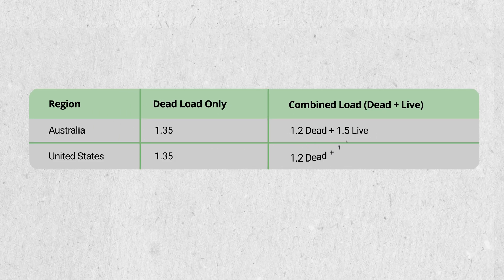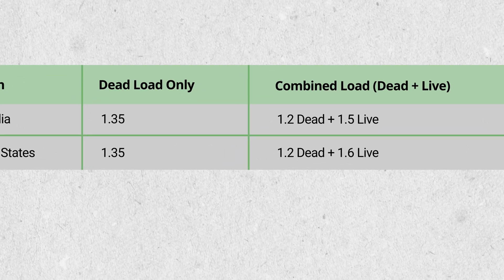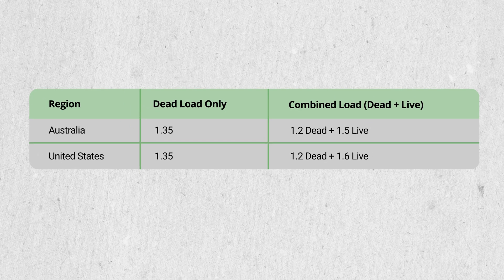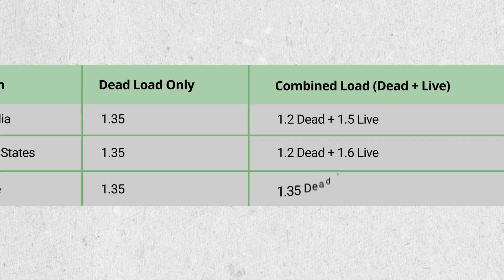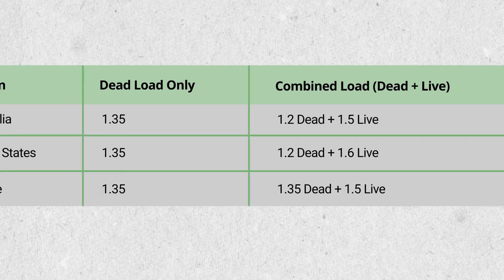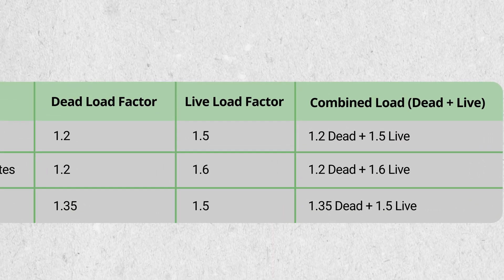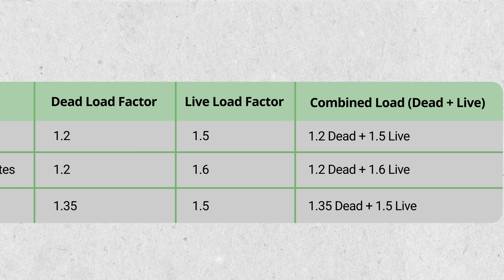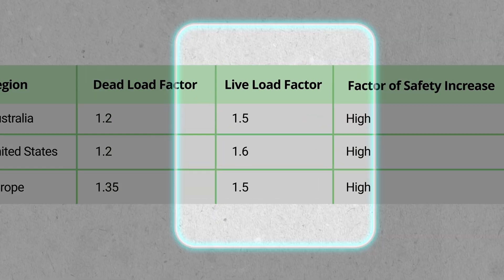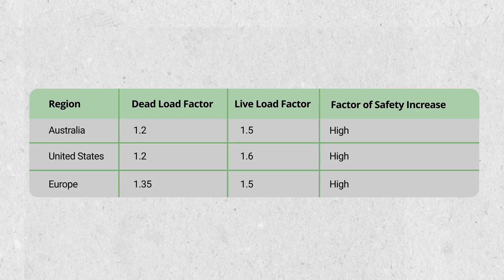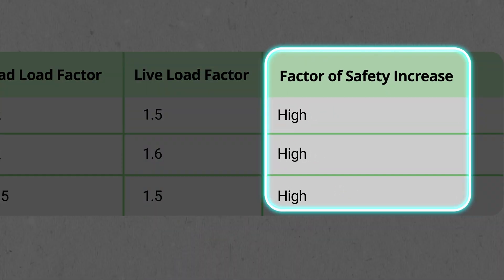In the US, you'll have a 1.2 dead load plus a 1.6 live load, so they're more concerned about the live load factors applied to your elements. In Europe, it's a 1.35 dead load plus a 1.5 live load. As you can see, the combinations are very similar — they're amplifying live load more and increasing dead load by a different amount. That's because dead load is a well-understood load; we're more confident in it, so we have a lower factor of safety. Live load, which is higher across all the standards, is a little bit unknown, and because of that unknown behavior, you increase the factor of safety on those elements.